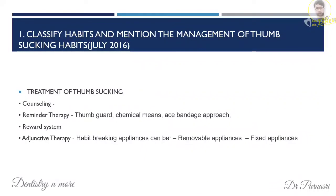Treatment consists of counseling of the patient. Then there is reminder therapy such as thumb guard, chemical means, and ACE bandage approach. There is a reward system where you can give small rewards or positive reinforcement to the patient. There is also adjunctive therapy — a habit-breaking appliance, either removable or fixed. You can explain each of these approaches in detail.